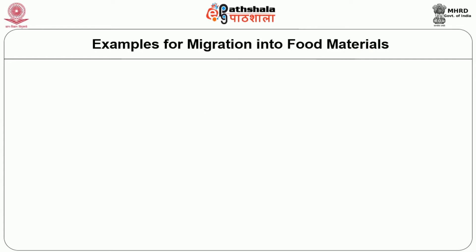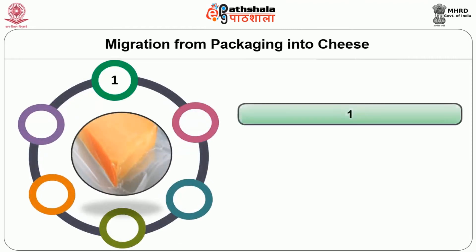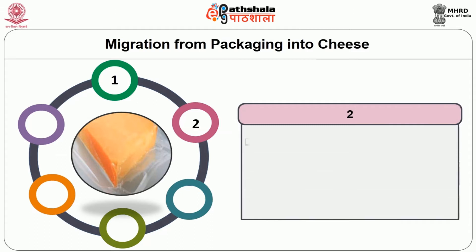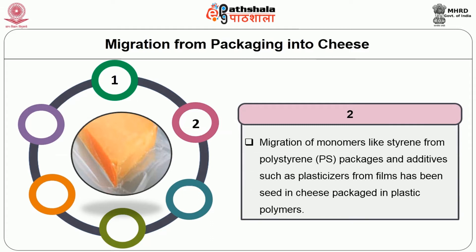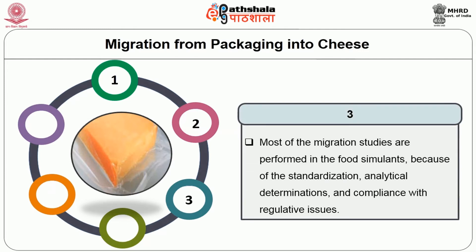Now let us look at some examples of migration into food materials. First, we will see some details about the migration from packaging into cheese. The migration of components from packaging materials must be taken into account. Migration of monomers like styrene from polystyrene packages and additives such as plasticizers from films has been seen in cheese packaged in plastic polymers. Most migration studies are performed in food simulants because of standardization, analytical determinations and compliance with regulatory issues.